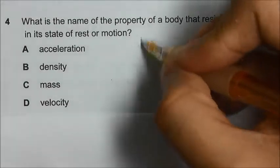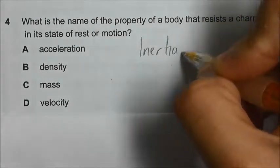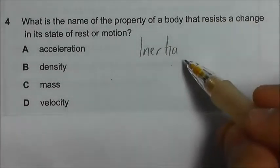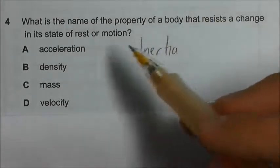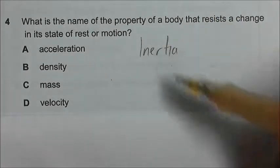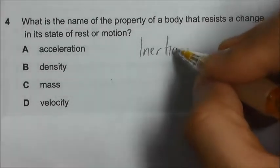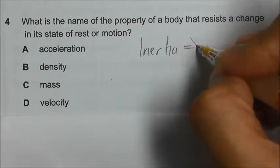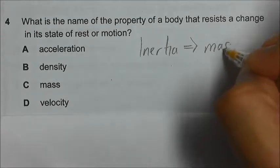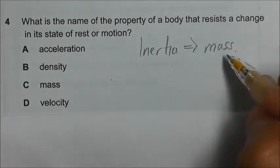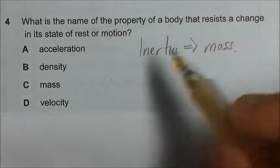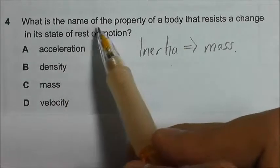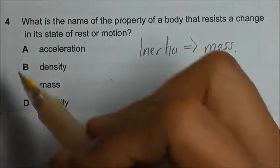Let us recall that inertia is the reluctance of a body to change its current state of rest or motion. So in this case, we are talking about inertia, and inertia depends on the mass—the larger the mass, the larger the inertia. So we are asked what is the name of this property. It should be mass.